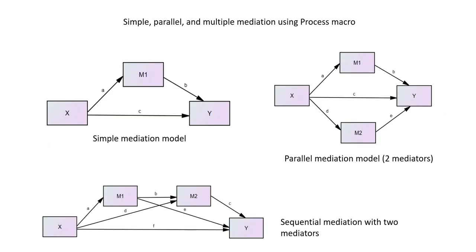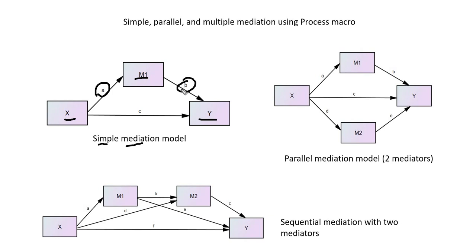These are the models we are going to be testing in this video. The first model is a simple mediation model where the effects of X on Y are mediated through M1. The individual paths are referred to as direct effects: path A is the direct effect of X on M, path B is the direct effect of M1 on Y, and path C is the direct effect of X on Y.